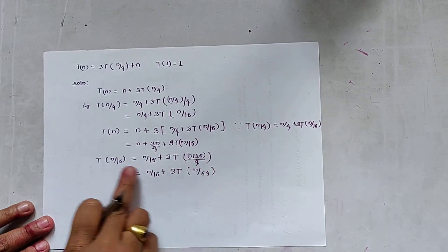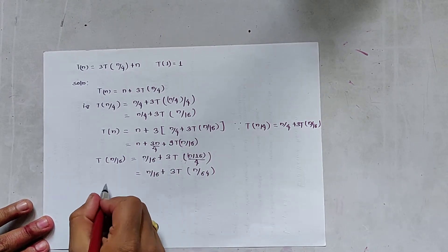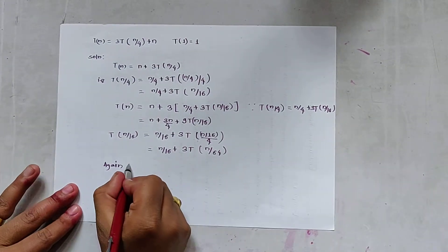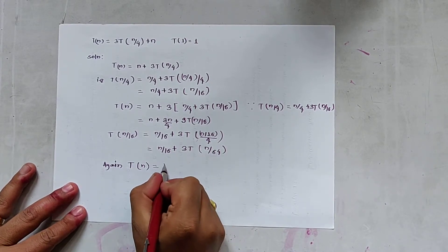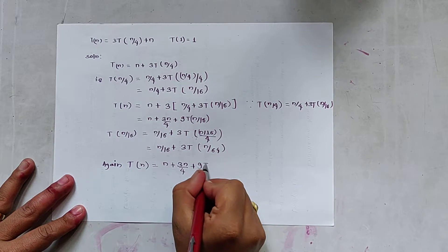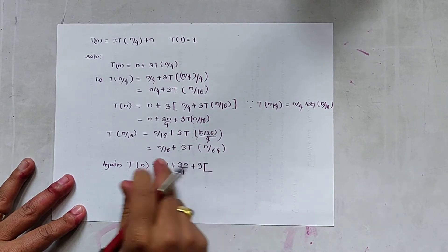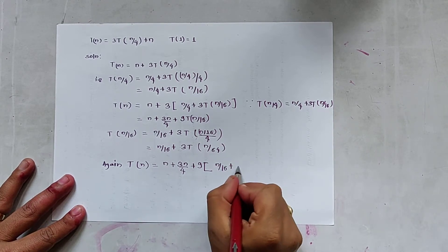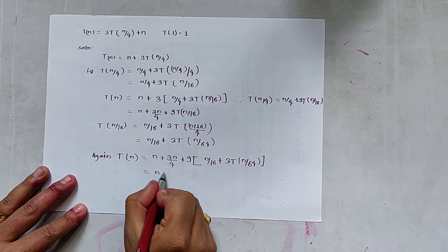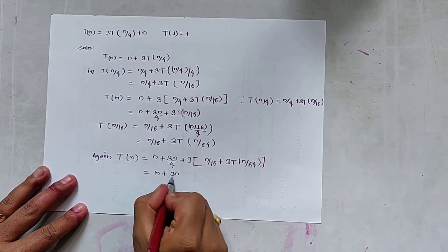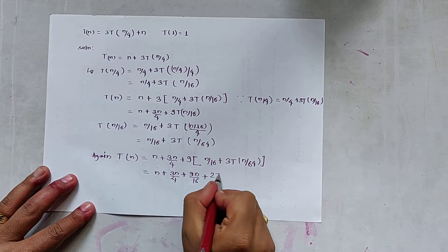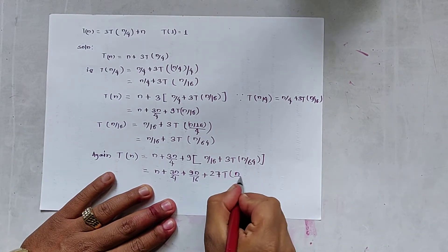We substitute the value of T(n/16) into the equation and open the braces again. This gives T(n) = n + 3n/4 + 9(n/16 + 3T(n/64)), which expands to T(n) = n + 3n/4 + 9n/16 + 27T(n/64).